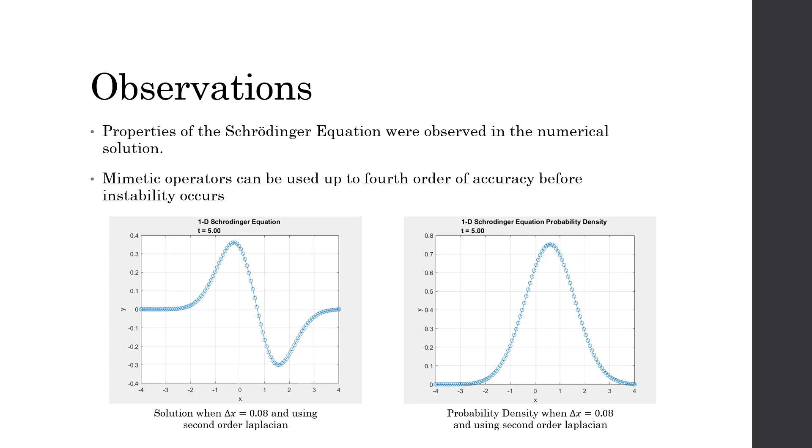The second is that when I went higher than a fourth order of accuracy with my mimetic operators, that was where instability started occurring.